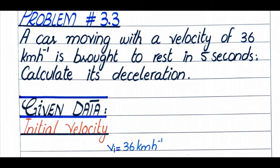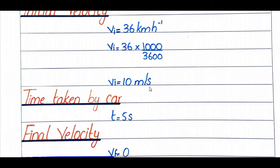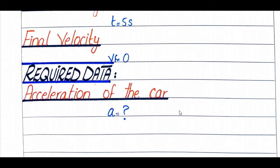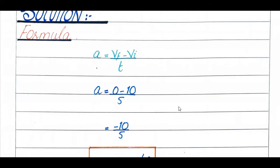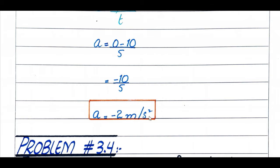Problem number 3.3: A car moving with a velocity of 36 km/h is brought to rest in 5 seconds. Calculate its deceleration. Initial velocity is 10 m/s (converted), time is 5 seconds, final velocity is 0. Using formula a = (vf − vi) / t: (0 − 10) / 5 = −2 m/s². The negative sign indicates deceleration.